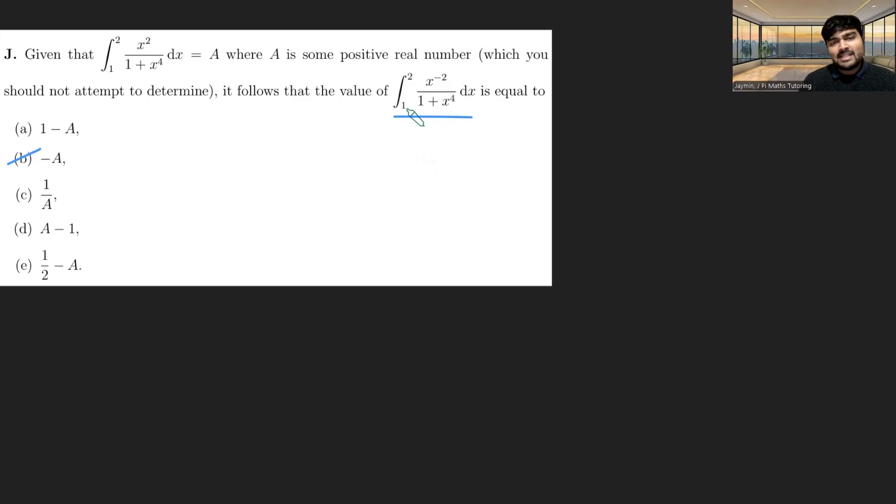We can also see that because x is going from 1 to 2, x is bigger than 1, and so x to the minus 2 is going to be less than x squared. So this integral, if I call it j, and this integral i, j should be less than i. So we can perhaps eliminate some options based off of that as well.